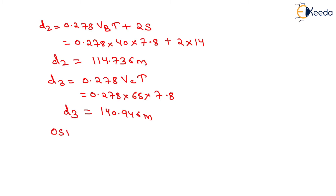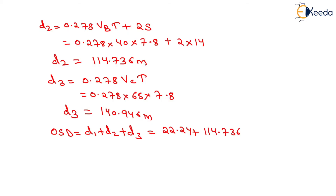We need to compute the value of OSD, which will be equal to D1 + D2 + D3. D1 is equal to 22.24, D2 is equal to 114.736, and D3 is equal to 140.946. On adding these three values, we will get OSD equal to 280 meters. That will be the overtaking sight distance.